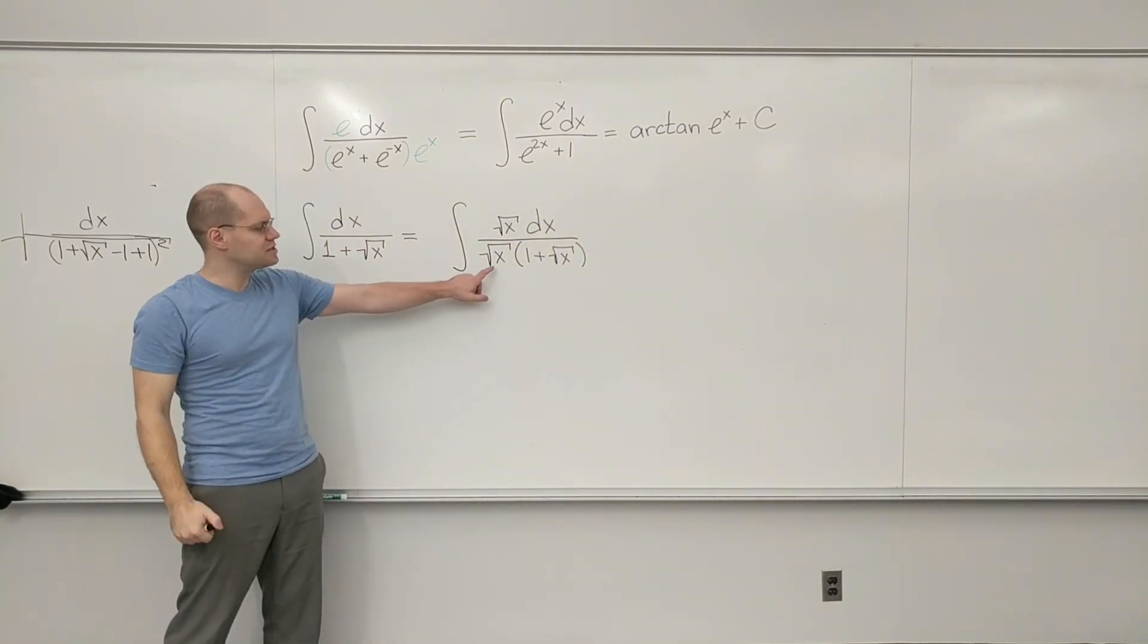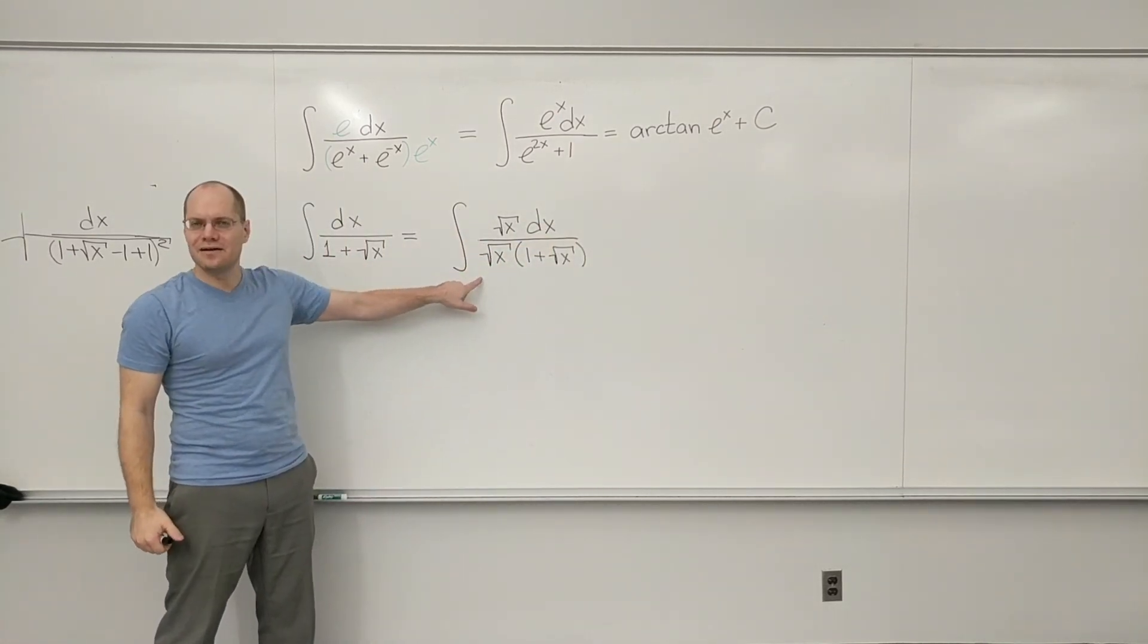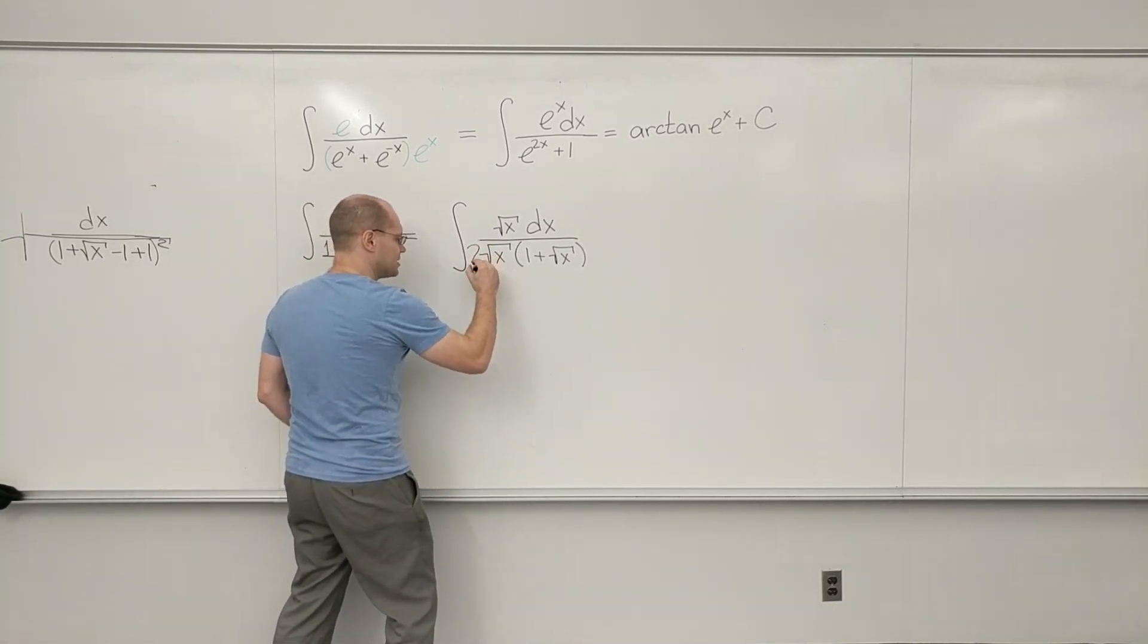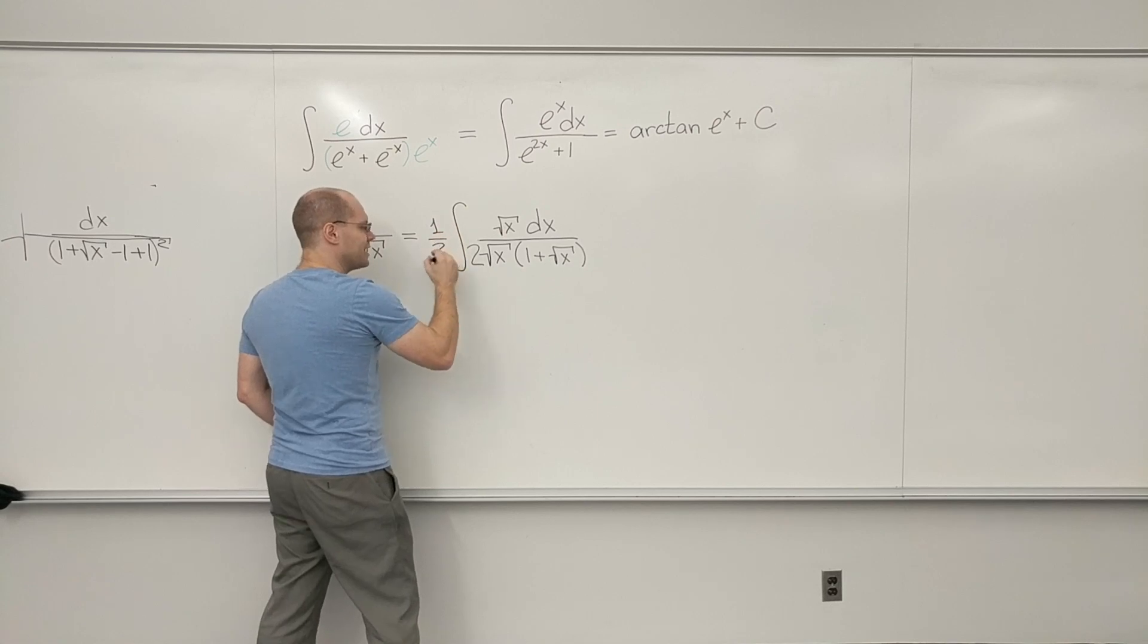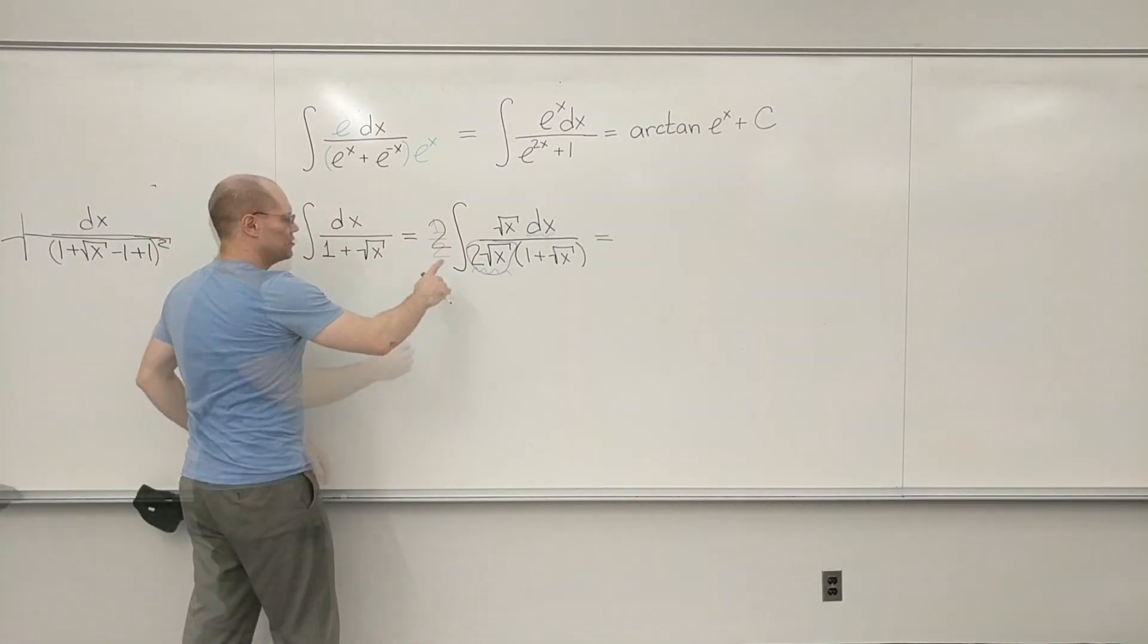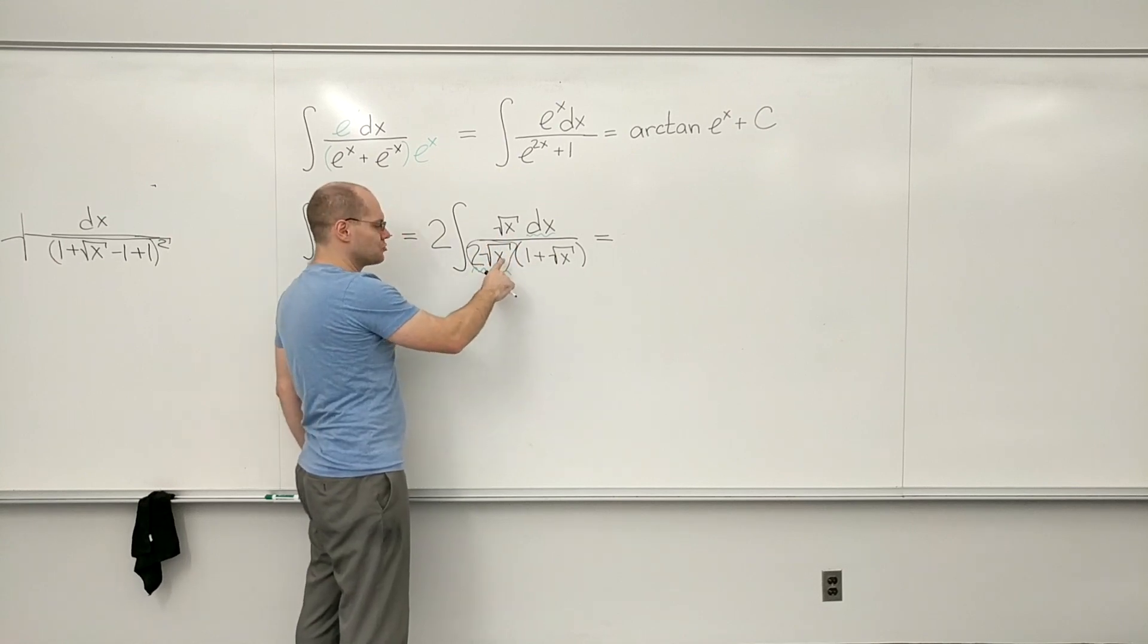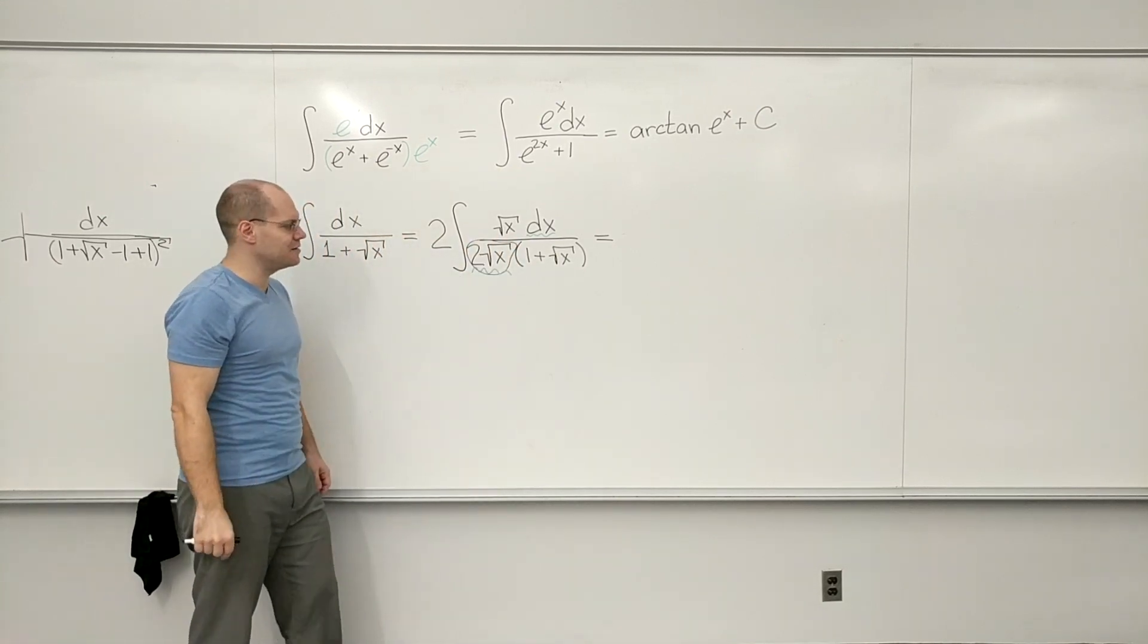So now in this form we see on the bottom the derivative of square root of X. And to make it more explicit, I'll make it a 2 here and make up for it with a 1/2 outside. So now that we've corrected the 2, we clearly see the derivative of the square root of X on the bottom.